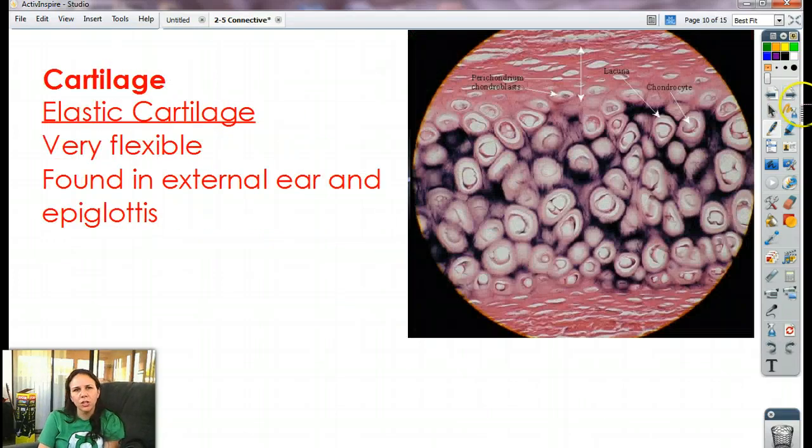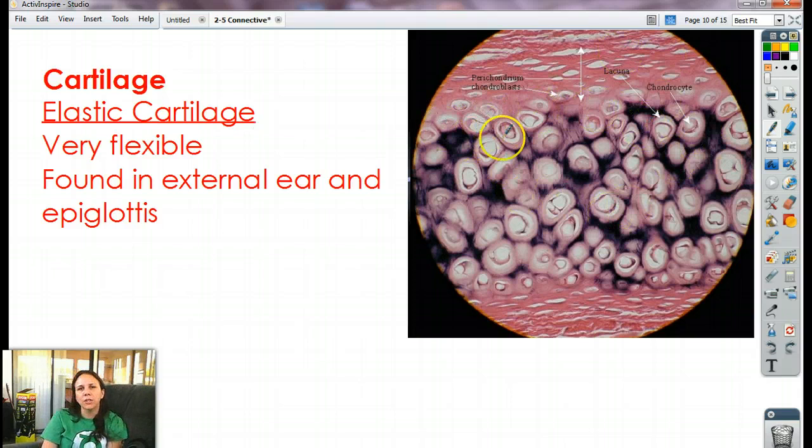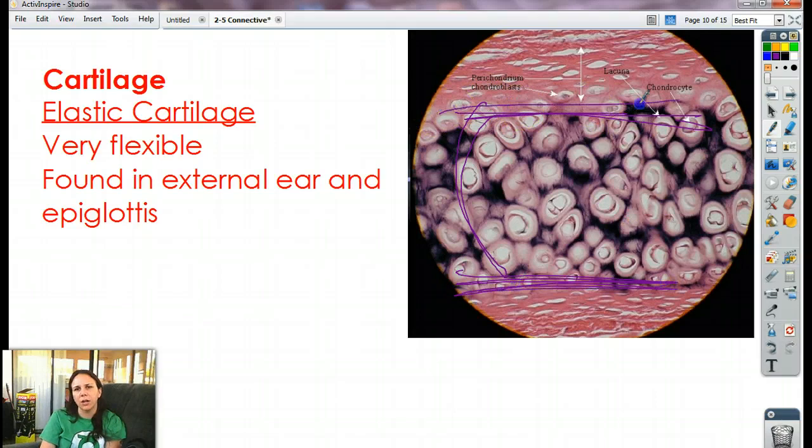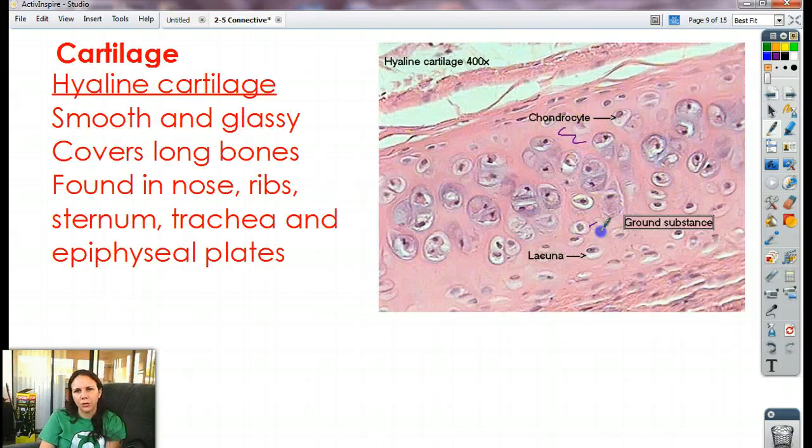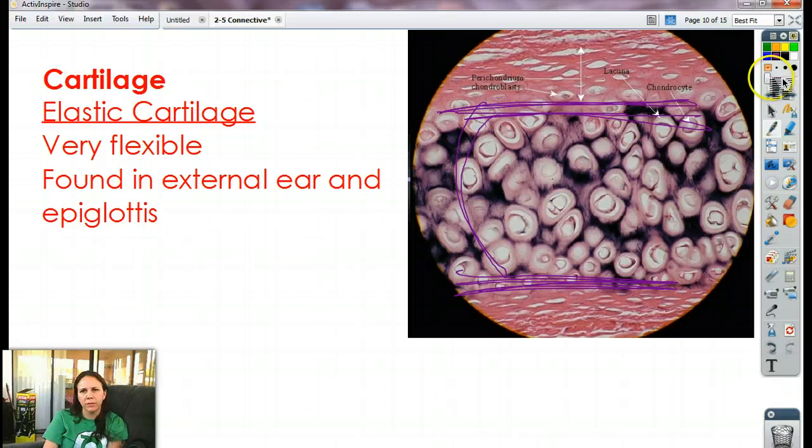Okay, the next one is elastic cartilage. This is very flexible, only found two places: your external ear and your epiglottis, which is down inside of there, and it helps to cover up your trachea when you swallow food so you don't choke on your food. Now this one, because it is very thin, you'll notice that I've got the fried egg thing going on as well. But notice how they're all bunched together in this packed, tight area. Most of the time, that's how it's going to look. So whereas the other one, notice it had all this extra fluff space around it. Not these guys, totally tightly packed together. Looks like styrofoam. Like when you rip styrofoam apart, that's what it looks like to me.